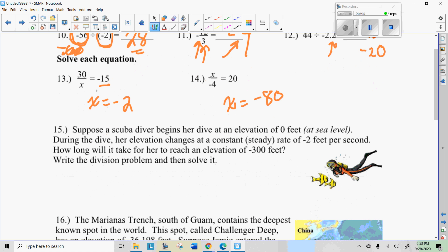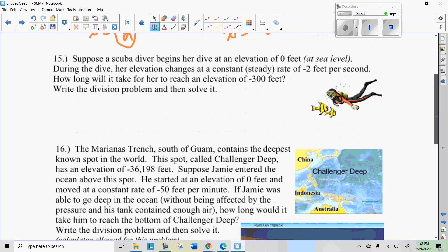Negative 15 times what number equals 30? That's negative 2, because a negative times a negative is a positive. 20 times negative 4 would have to equal x here, because you can work backwards by using multiplication, and that's negative 80.